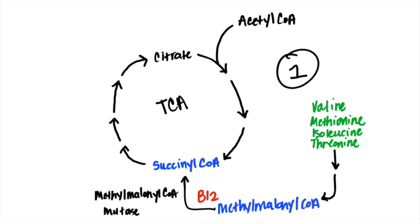Starting with B12 — in front of you is the citric acid cycle, also known as TCA or the Krebs cycle. You probably know the classic way that substrates enter through acetyl-CoA, which is a product of pyruvate from glycolysis, several amino acids, and fatty acids. However, there are actually various different ways to enter the citric acid cycle, and acetyl-CoA is only one of them.